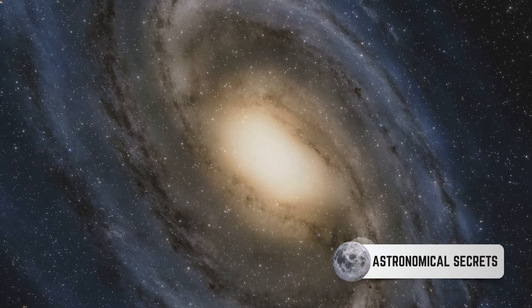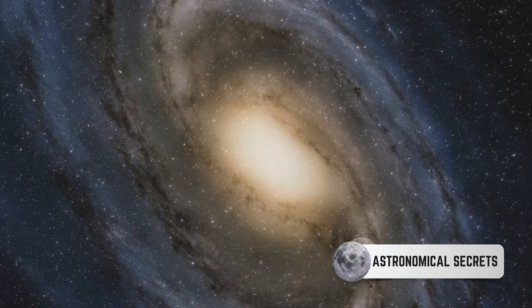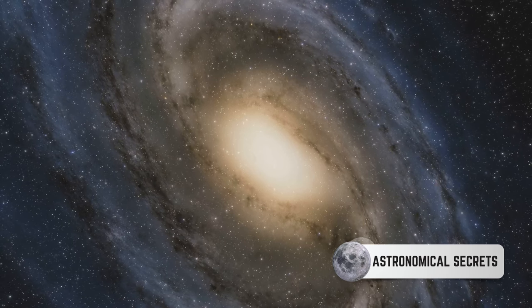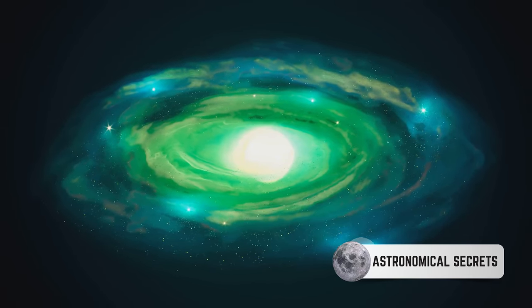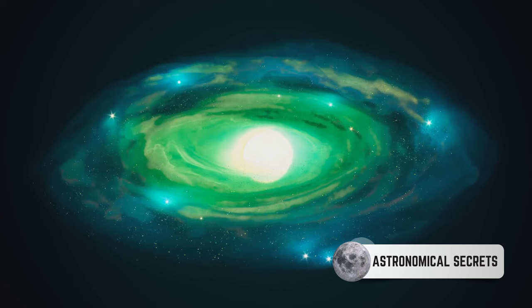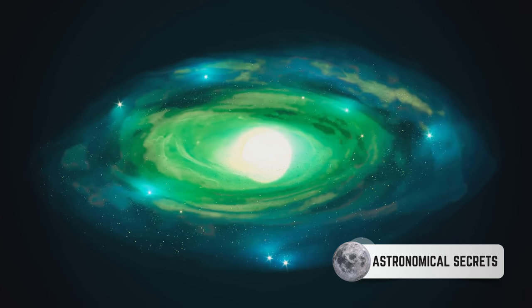Now let's talk size. Spiral galaxies can be quite small, boasting a mere few billion stars. But don't let that fool you. Some spiral galaxies, including our very own Milky Way, are true behemoths, with up to 400 billion stars, stretching across a staggering 100,000 light years.